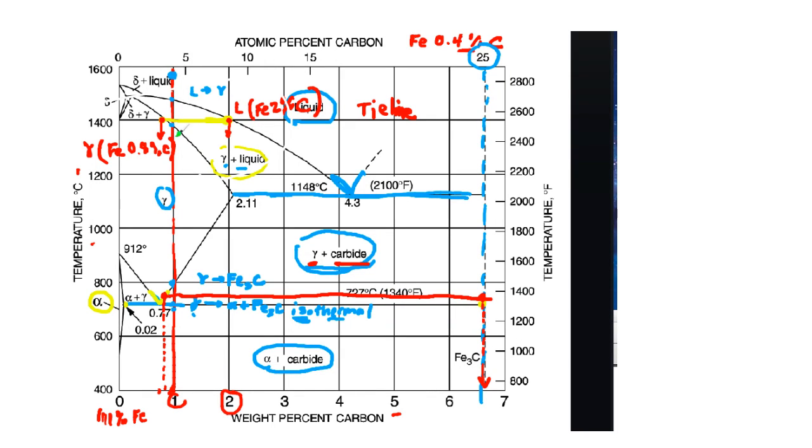Okay, let's look at how we're going to use this tie line to compute the fraction of each of these phases. So this tie line, as you can see, is a horizontal line, and the endpoints of the line run into these single phase regions.